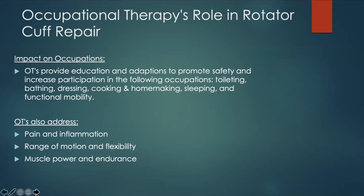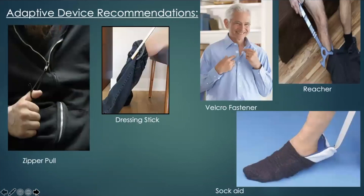When dressing, clothing that is simple to don and doff should primarily be chosen, keeping in mind the immobilization sling, which is worn full-time for the first few weeks post-op. Such clothing items may include velcro fasteners, zipper pulls, a dressing stick, shoe horn, sock aid, and reacher. It is recommended the client sits to avoid disequilibrium and potential falls during lower body dressing, as the client is not able to use the affected extremity for stability.